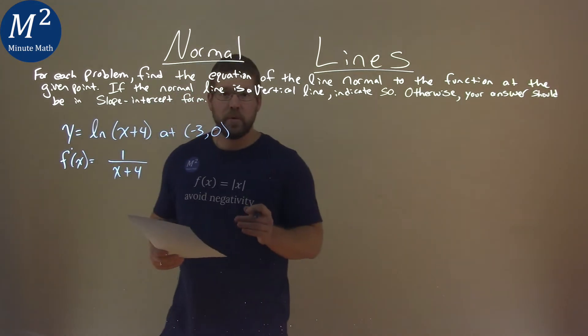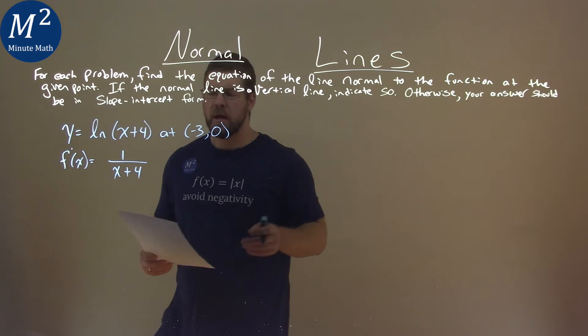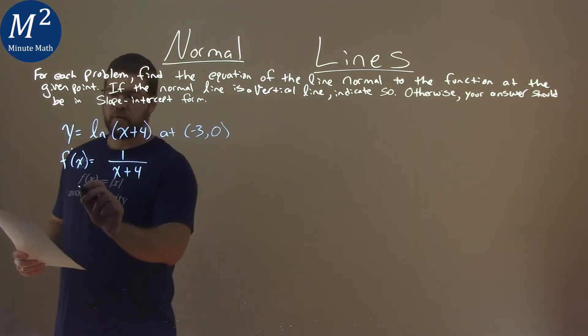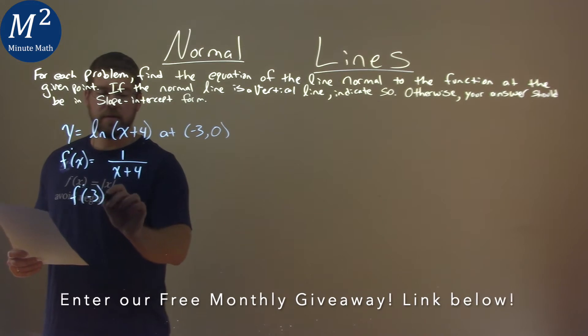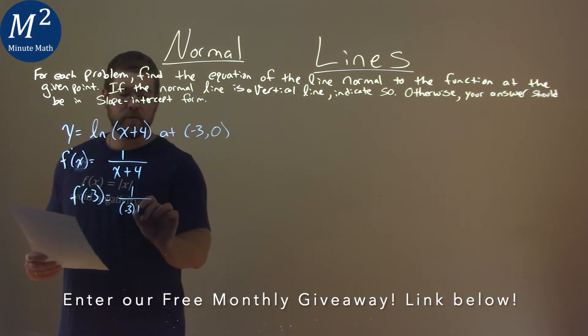From there, we want to find the slope of the tangent line, and we'll use it to define the slope of the normal line. So we take our derivative, and we plug in negative 3 in for x. So we have f prime of negative 3 here, and for our x value, 1 over negative 3 plus 4.